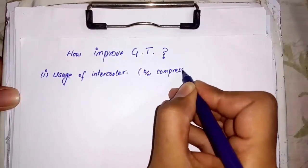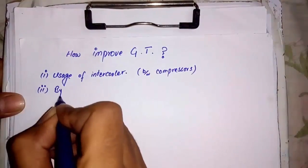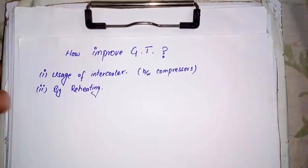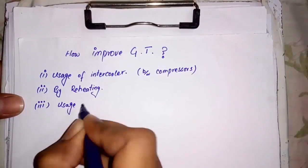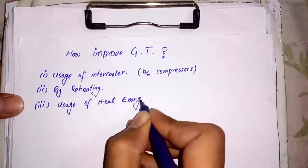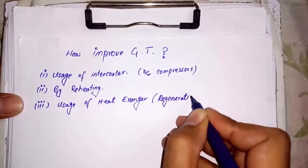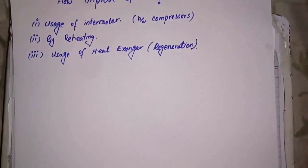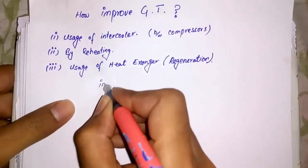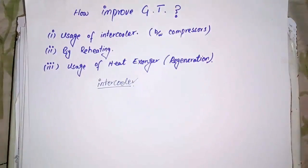First of them is by the usage of intercooler. Second method is by reheating, and the third method is by usage of heat exchanger regeneration. Let's start our discussion with first method, which is usage of intercooler between the two compressors.